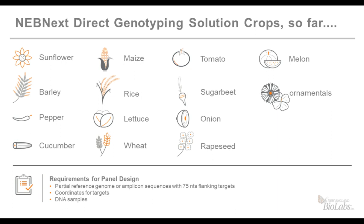The NEBnext Direct Genotyping Solution has been used for different types of crops from sunflowers to rapeseed, including ornamentals. To generate a custom panel, the requirements are minimal: a partial reference genome or amplicon sequence with at least 75 nucleotides, a flanking region or human coordinates of targets, and a DNA sample from your organism. NEB partners with customers to design and produce panels according to specific needs and DNA isolation protocols. Once the bait pool is ready, you can directly proceed with production using the technology.